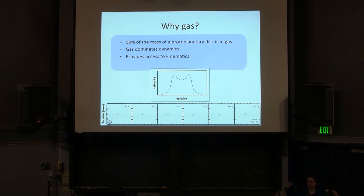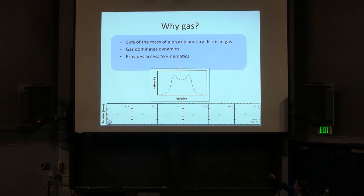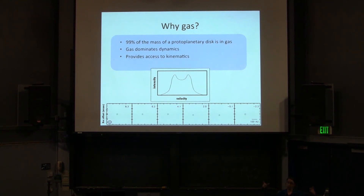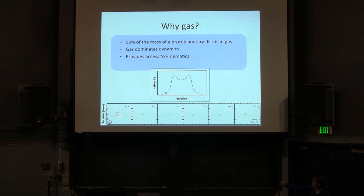Most stars are moving relative to the sun, so there's some systemic velocity associated with every star. For nearby star-forming regions, that tends to be plus or minus a few kilometers per second. In Keplerian rotation, the outermost parts of the disk orbit the slowest, and as you get closer to the star, material moves faster and faster. So the fastest-moving stuff should be closest to the star. When you look at a channel map out in the line wings, you'd expect to see this high-velocity material essentially centered on the position of the star.